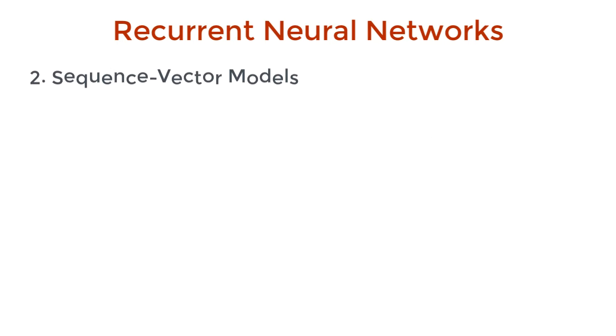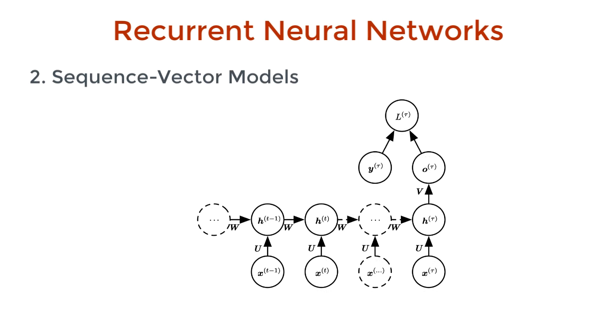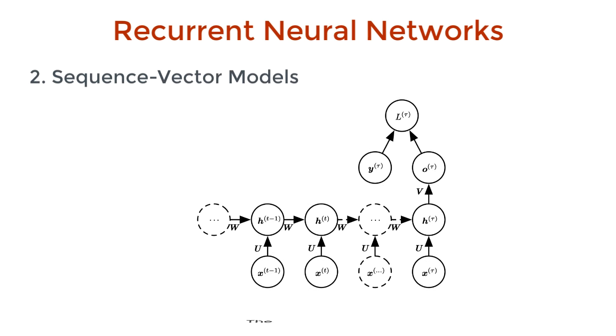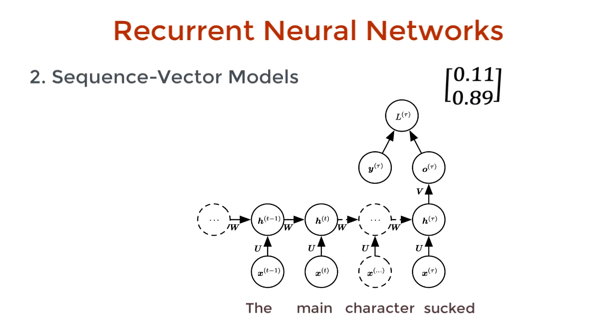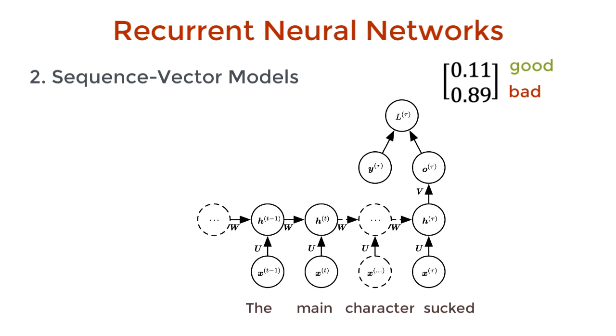The second type is a sequence-to-vector model. These neural networks take in a sequence as input and spit out a fixed-length vector. In sentiment analysis, the movie review is an input, and a fixed-size vector is the output indicating how good or bad this person thought the movie was.